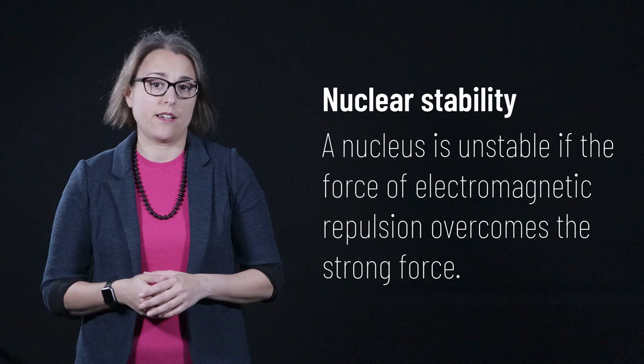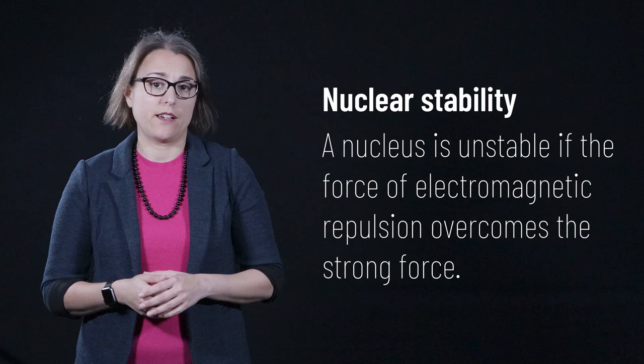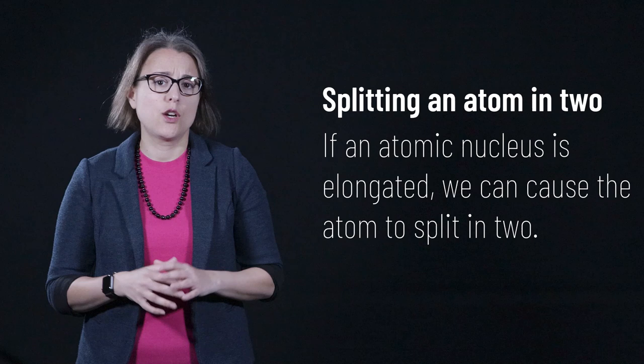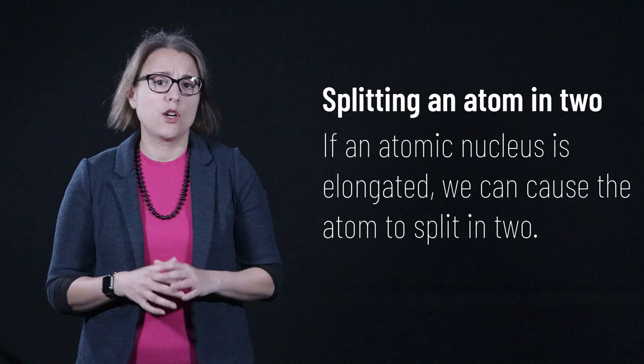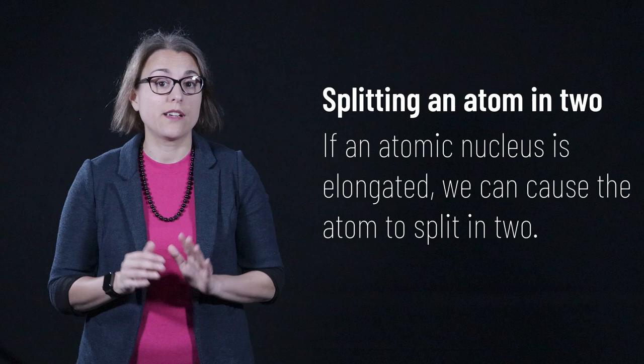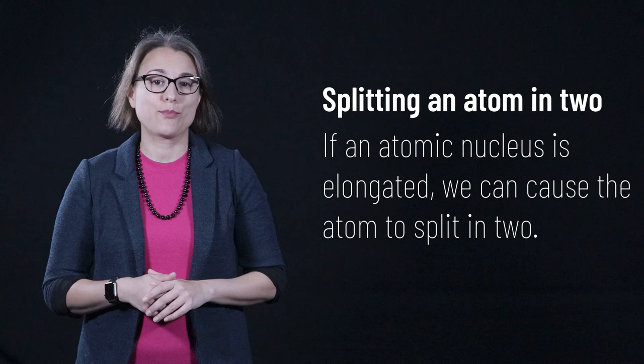As we learned in Lecture 33, radioactive decay occurs when an atomic nucleus is unstable due to the presence of enough protons to allow electromagnetic repulsion to become stronger than the strong nuclear force that otherwise keeps the nucleus of an atom glued together. If, instead, we artificially elongated an atom, the electromagnetic repulsion will cause the atom to split in two. It's important to note that this elongation and splitting does not happen spontaneously; something must provoke the process. This process is known as fission.